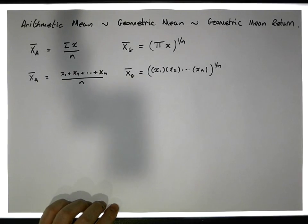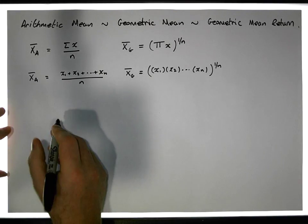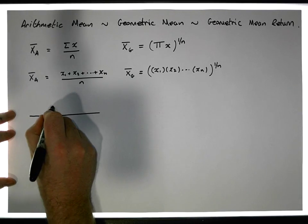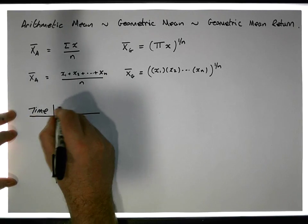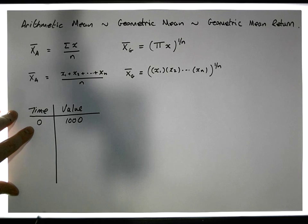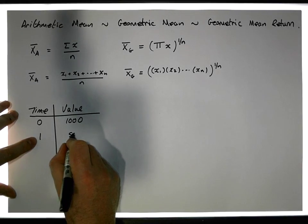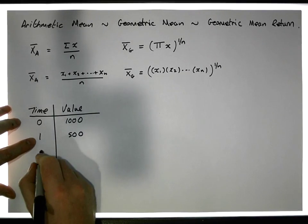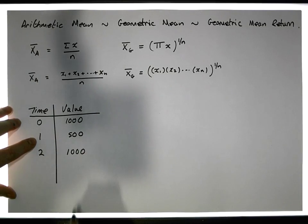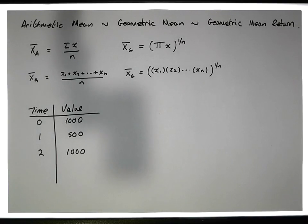Now let me consider a particular example. Let's say you've made an investment of a thousand euros. So here's a schedule — time going down. At time zero we invested a thousand euros. One year later the investment has reduced down to 500 euros. After another year the investment has rebounded back to a thousand euros. So this is the value of the investment over this particular time period.